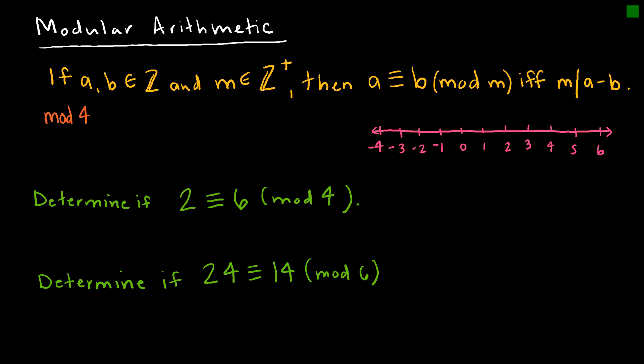Let's look at mod 4 since that's what our first example will deal with. When we're talking about mods, we're talking about remainders — we're very interested in what the remainder is. So if I take something and divide it by 4, I could possibly get a remainder of 0, 1, 2, or 3. If I got a remainder of 4, that would really be the same as a remainder of 0, because 4 is divisible by 4 exactly. So these are really my only options.